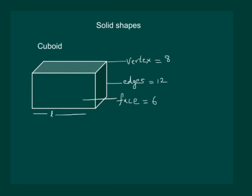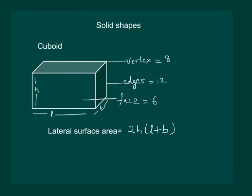If L is the length of this cuboid, B is the breadth, and H is the height, then its lateral surface area — that means the area of the four walls — is equal to 2H into (L plus B). And its total surface area, that is the area of the four walls plus the roof plus the floor, is equal to 2 times (length into breadth plus breadth into height plus height into length).